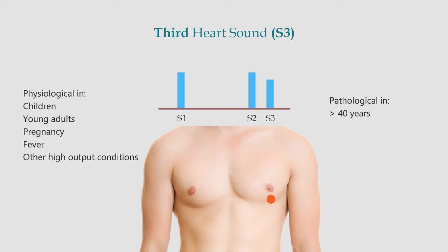The most common causes of pathological S3 are left ventricular failure and mitral regurgitation. In heart failure, S3 occurs with a tachycardia referred to as a gallop rhythm, and S1 and S2 are quiet.